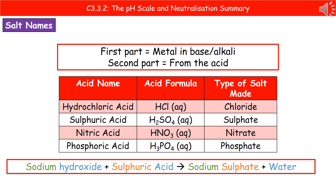To summarise: hydrochloric acid makes a chloride; sulfuric acid makes a sulfate; nitric acid makes a nitrate; and phosphoric acid makes a phosphate.